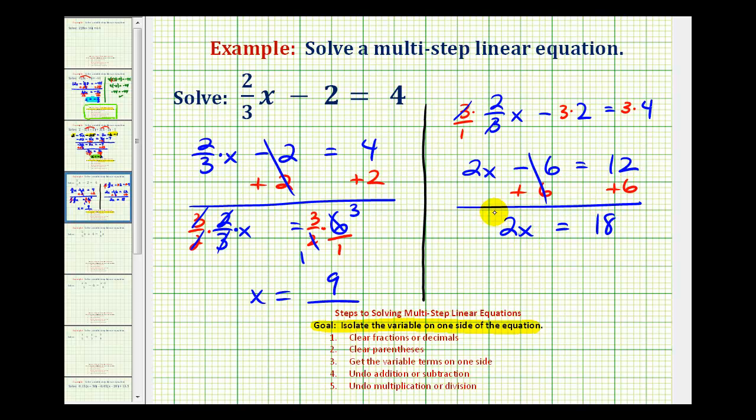And again since two x means two times x to isolate x we'll have to divide both sides by two. Two divided by two is equal to one. One times x is x. And eighteen divided by two is equal to nine. So notice how whether we work with the fractions when solving the equation or we clear the fractions to begin with the solution is the same.